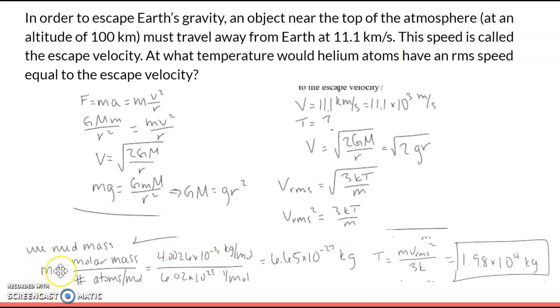Looking at this, v_rms we know, k the Boltzmann constant we know, so the only thing we need to figure out is this m, which is the mass we're dealing with for a helium atom. To find the mass of one atom, we're taking the molar mass and dividing by the number of atoms per molecule, or Avogadro's number. The molar mass from the periodic table divided by Avogadro's number gives us a mass for a helium atom of 6.65 times 10 to the negative 27 kilograms.